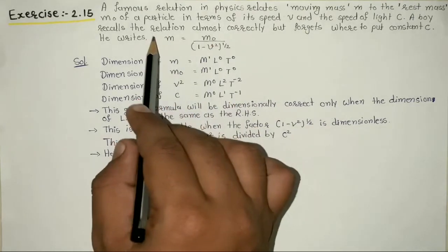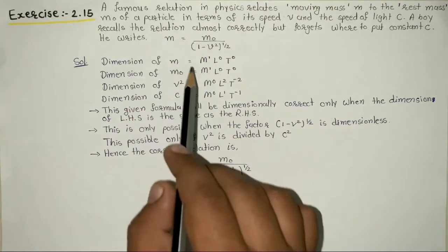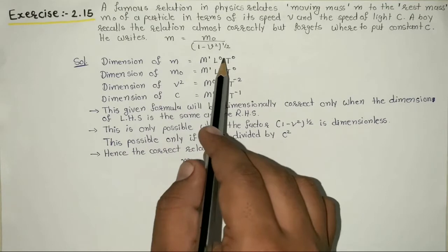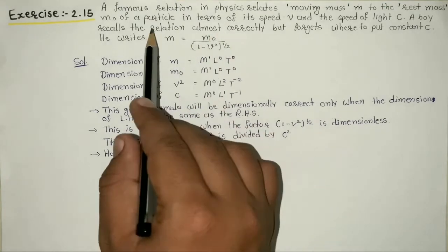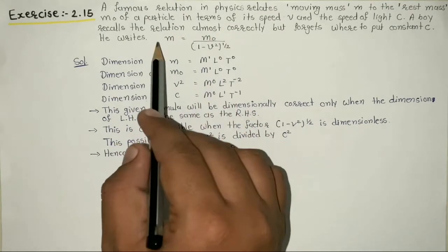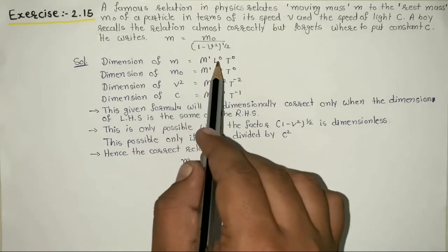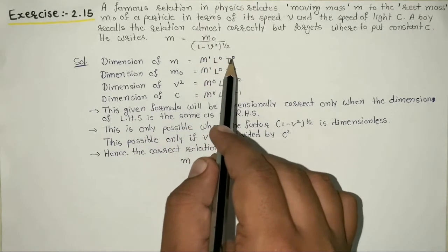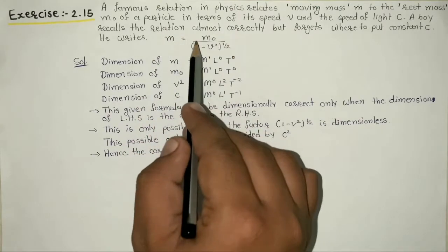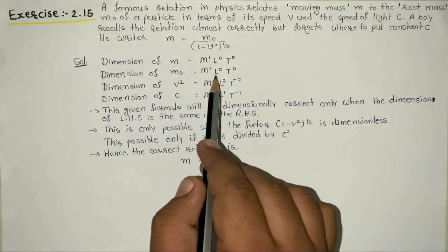For this equation to be dimensionally correct, left hand side M¹L⁰T⁰ must equal right hand side. m0 has dimension M¹L⁰T⁰.